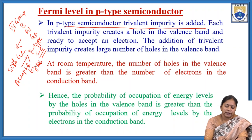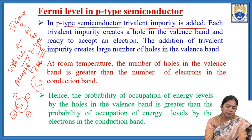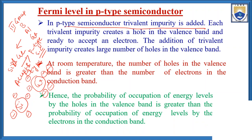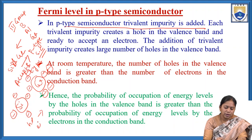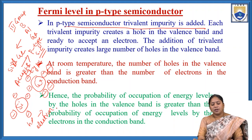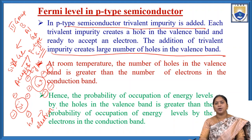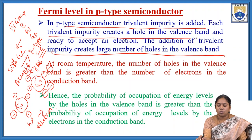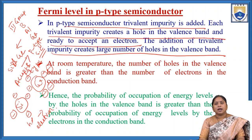In P-type semiconductors, silicon has four valence electrons. When aluminium or gallium is added to the silicon crystal, these third group elements have only three valence electrons. These three valence electrons form covalent bonds with the neighboring silicon atoms, but one more electron is required to complete the covalent bond — this vacancy is called a hole. Hole is always ready to accept an electron. So the addition of trivalent impurity creates a large number of holes in the valence band.